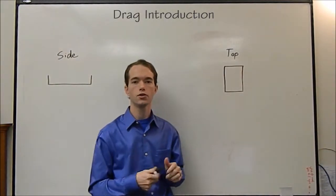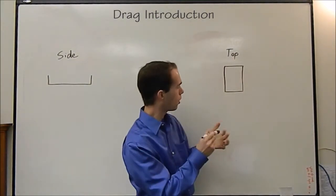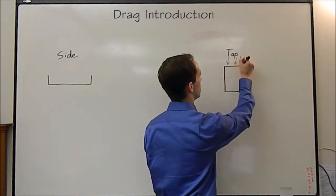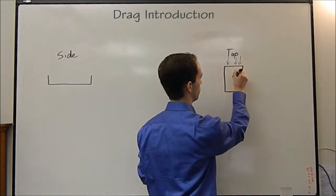Form drag is drag that is a result of pressure differences between the front and the back as you're moving. So if we have, let's say we're going to go, this is the water, and the boat's actually moving this way.